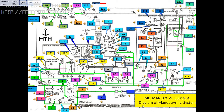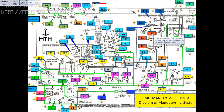Today I will be explaining the manoeuvring system of the main engine, make MAN B&W. I will be talking about the starting distributor — that is block numbers 14, 15, and 117.